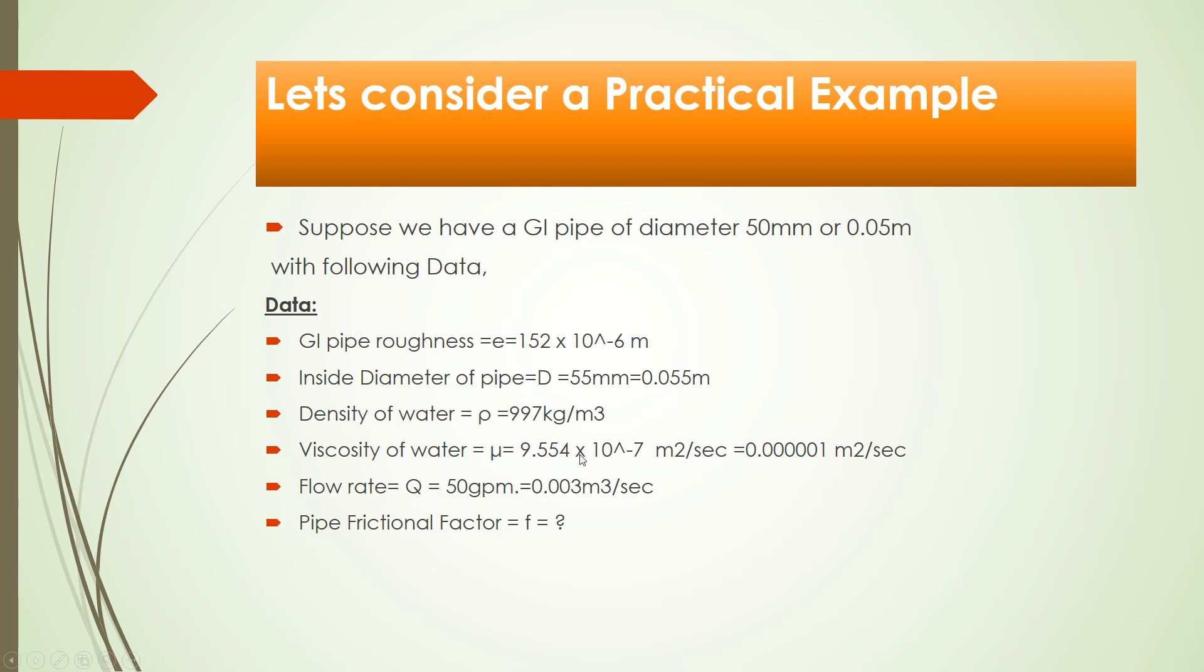Viscosity of water is 9.554 × 10^-7 m²/sec. Flow rate which I need to move from this pipe is 50 GPM, converting into m³/sec: 0.003 m³/sec. We need to calculate pipe friction factor.